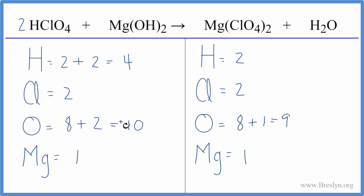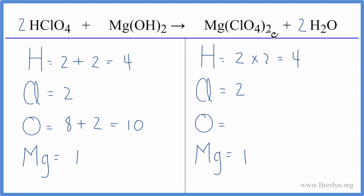Let's fix the hydrogens next — I think that might fix the oxygens too. We have four hydrogens on the left and two on the right, so we put a two in front of the H₂O. Two times two gives us four — so those are balanced. Updating the oxygens: two times four gives us eight, plus one times two gives us two, for a total of ten oxygen atoms. Everything is the same on each side — this equation is balanced.